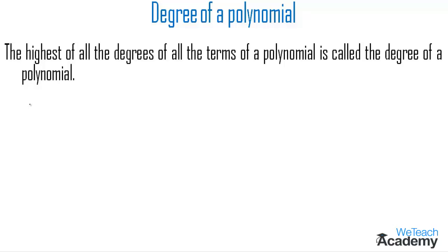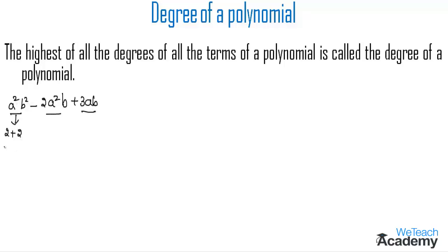First let us consider the polynomial a squared b squared minus 2a squared b plus 3ab. We have here three terms. Let us find the degree of the first term. The power of a and b are both 2, so adding 2 plus 2 we get 4.